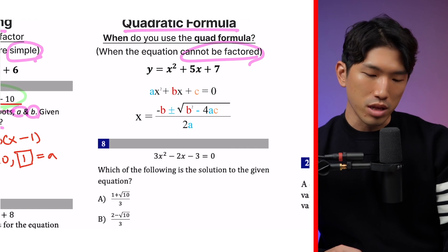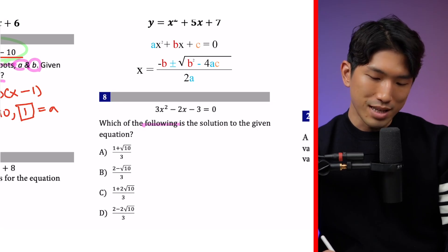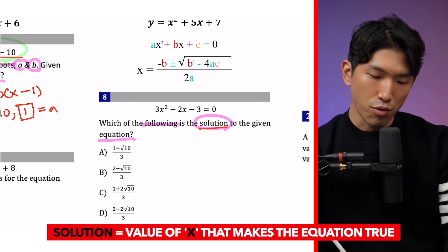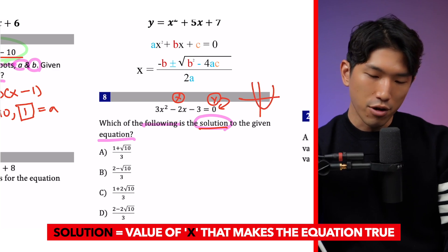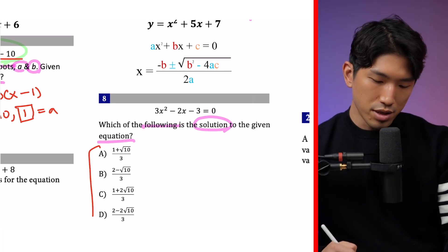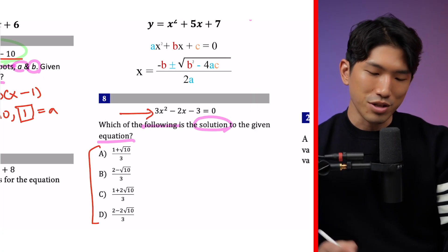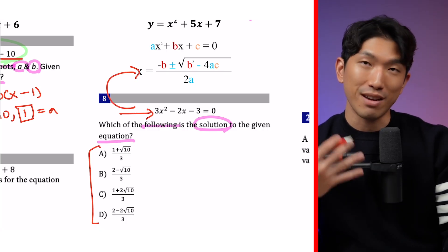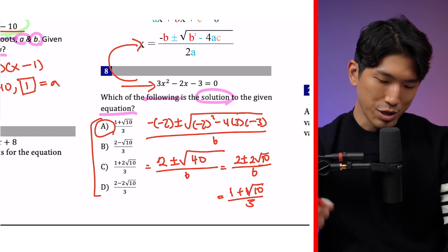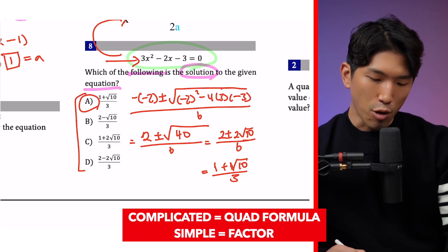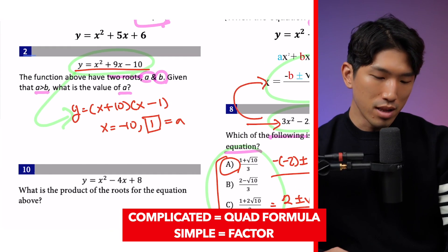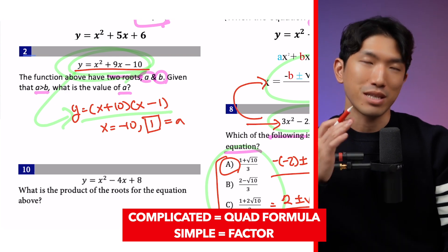But what if the numbers are not clean and the equation cannot be factored? For example: which of the following is the solution to the given equation? The solution refers to the value of x that makes the equation true — in this case, the value of x that makes y equal to zero, which is the x-intercept. By looking at the answer choices, we already see radicals, which tells us the equation is not factorable. So we go straight into the quadratic formula. The main takeaway is: if numbers look complicated or you see radicals in the answer choices, plug into the quadratic formula.